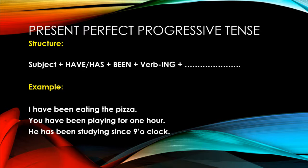Here are some examples given below. 'I have been eating the pizza' - that means you are still eating the pizza. You started in the past but you're still eating it, which is a continuous or progressive manner. Next example: 'You have been playing for one hour.' That means in this sentence, you're still playing in the continuous term. You started in the past but you're still continuing it.